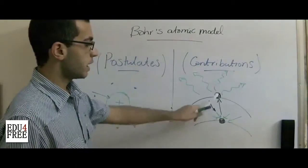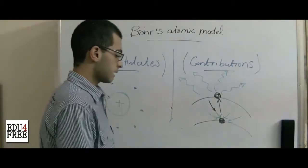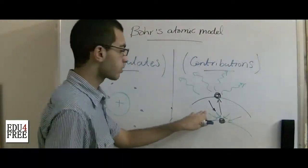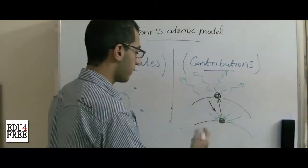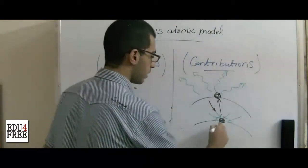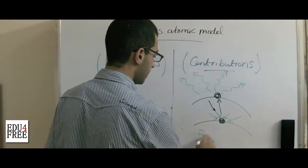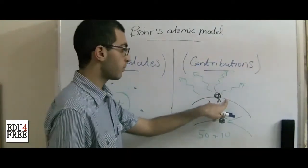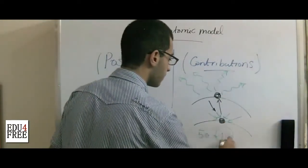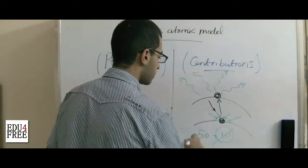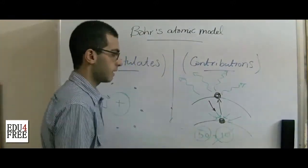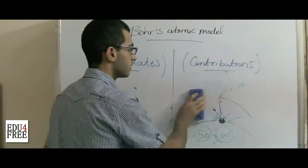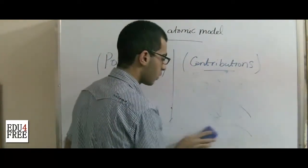The amount of energy lost and gained in this process is constant, and that is why the electron returns back to the same energy level. For example, if an electron at the ground state has energy of 50 and gains an amount of 10, it moves to a higher energy level. It then loses the same amount — 10 — and returns back to 50 at its ground state. This discrete amount of energy gained or lost is called the quantum number.